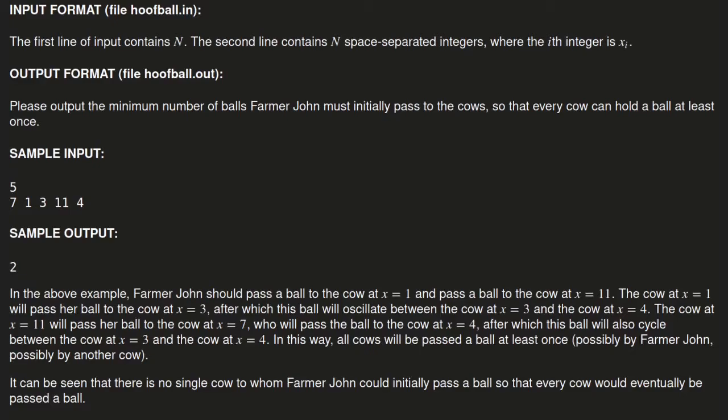The two pieces that help us solve this problem is to figure out how many cows will pass to a specific cow for every cow basically. The next thing is to figure out how many pairs of cows will just oscillate the ball in between each other. So this will help us figure out how many balls we need total.